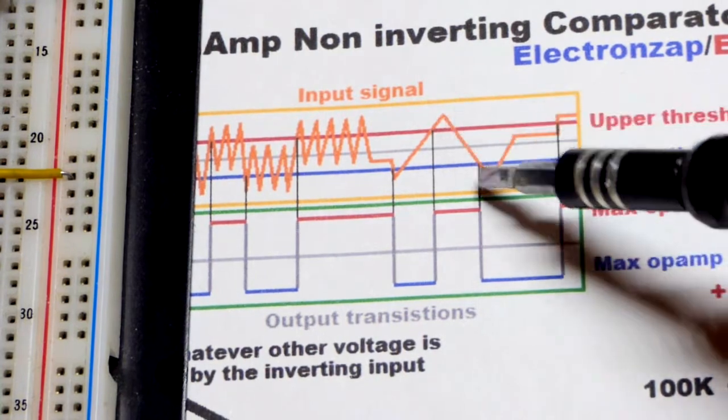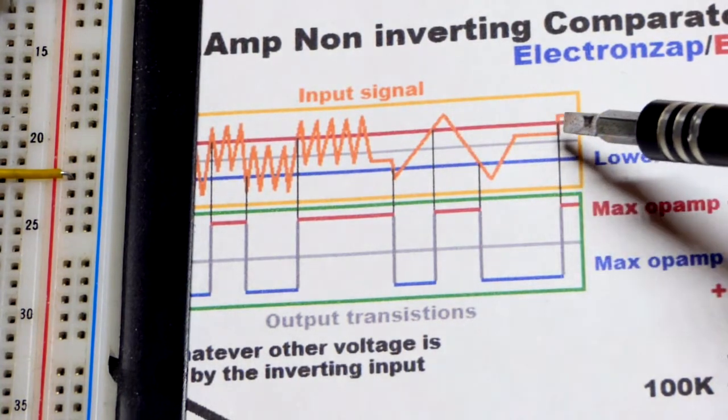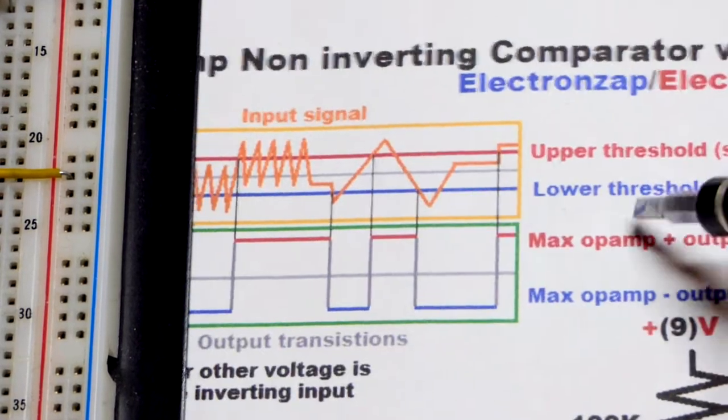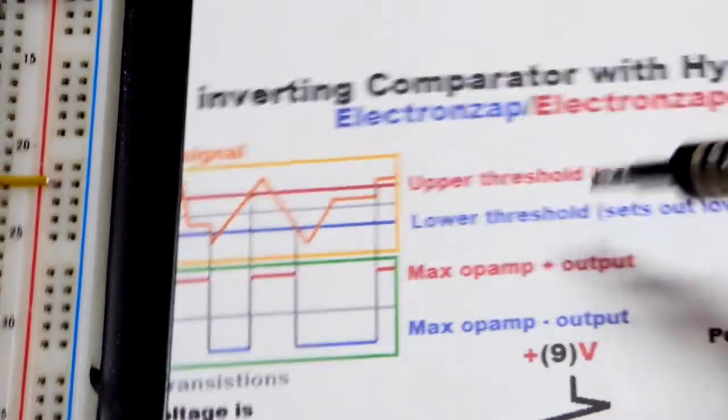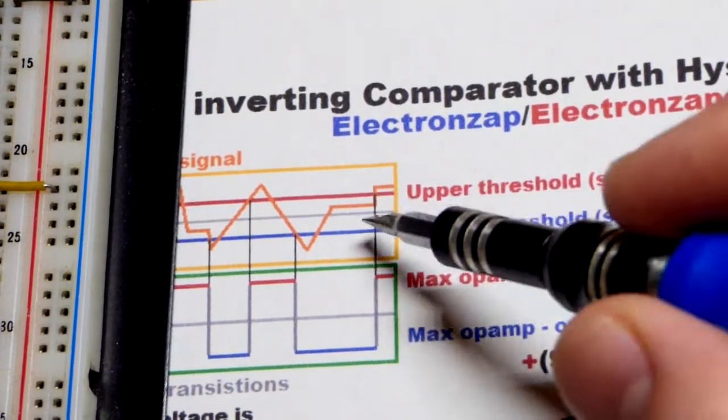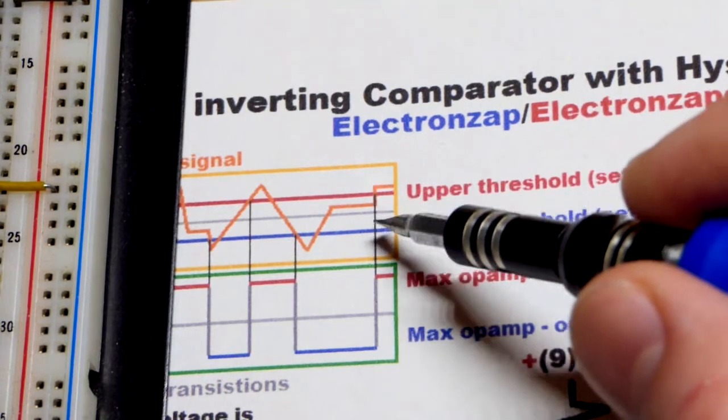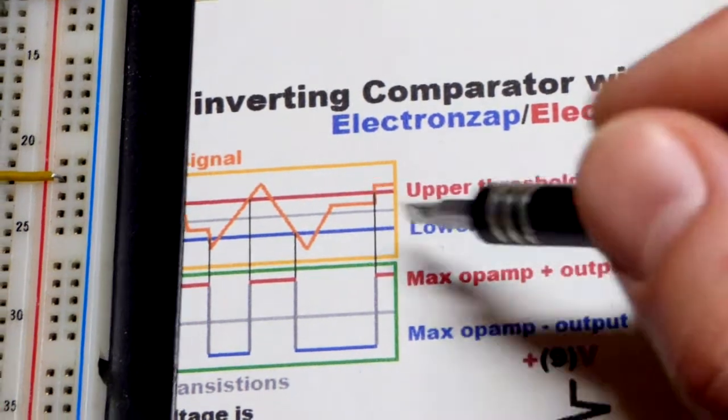It can slowly cross that line or stay in one spot. We have the lower threshold there and the upper threshold there. This depends on the positive feedback—how wide that threshold area is.